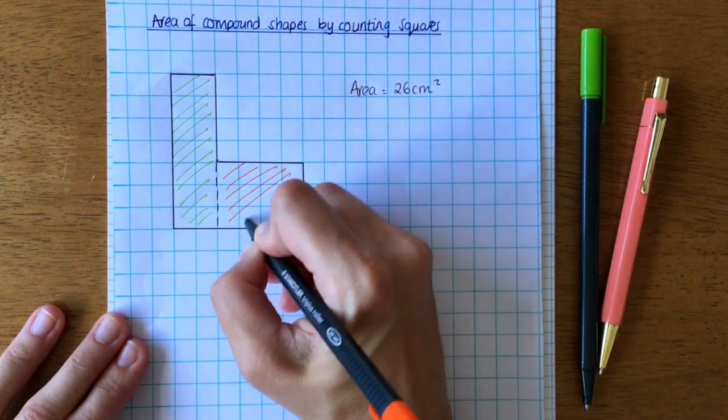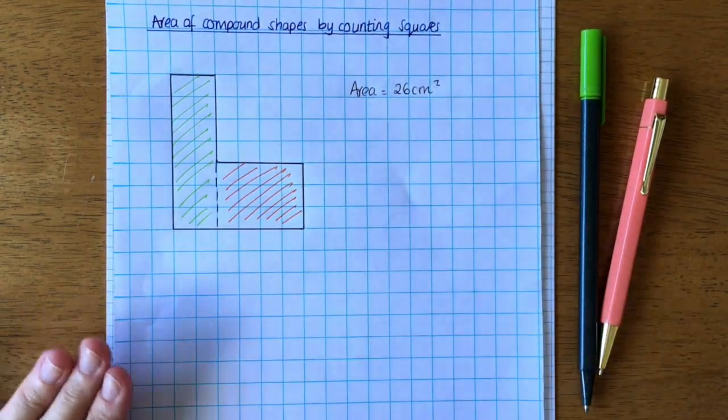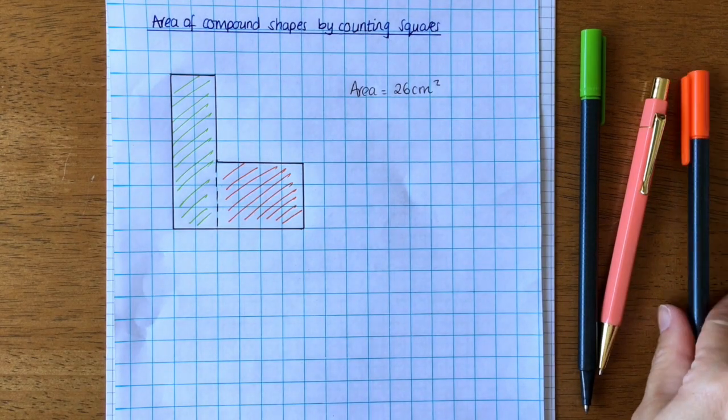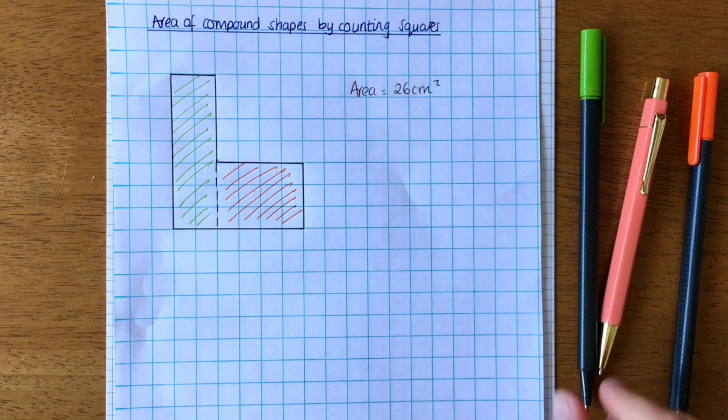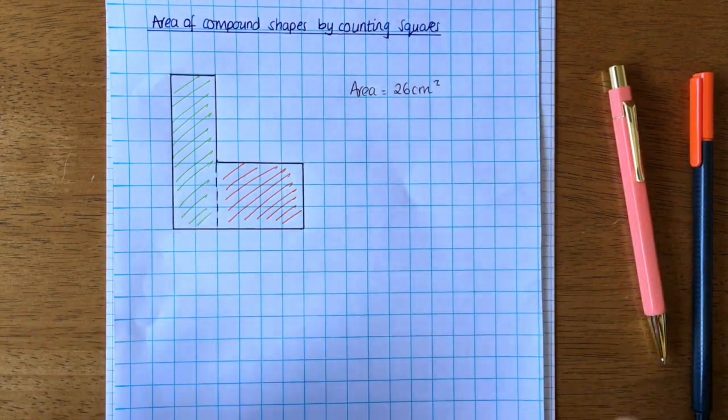So in all the questions that you're going to be doing, you're only going to need two different colors. You're only ever going to split them into two rectangles, otherwise you're going to make it more complicated for yourselves. So we're going to do like we did.